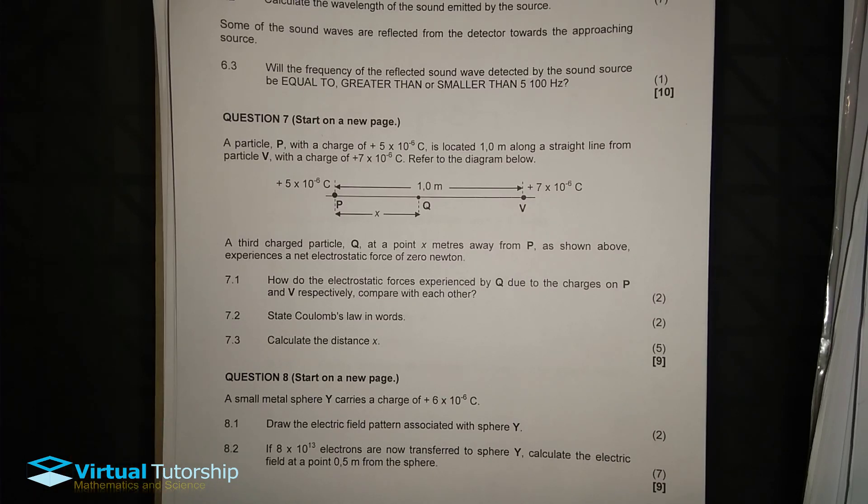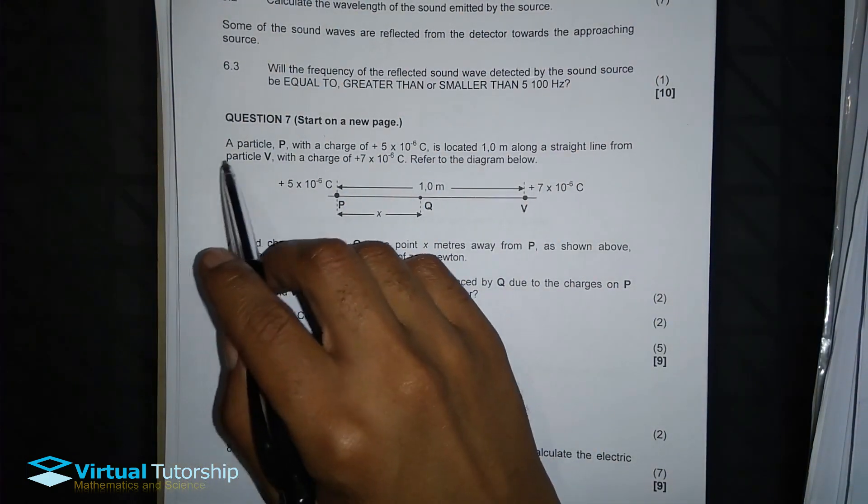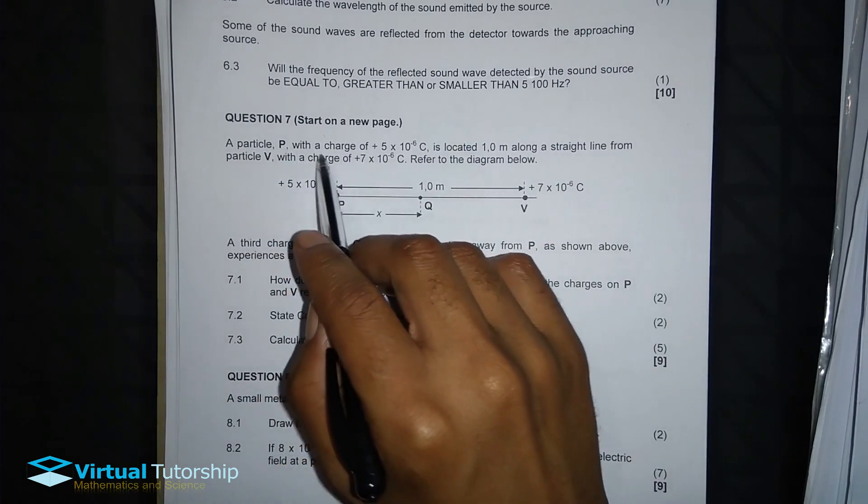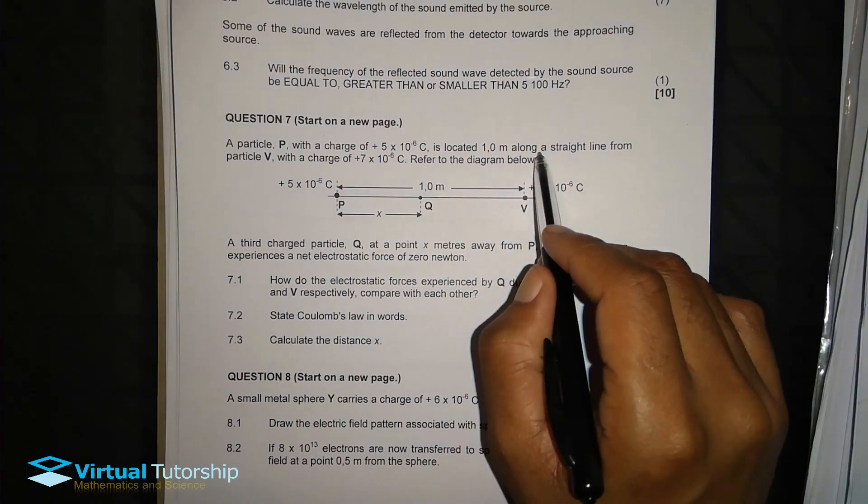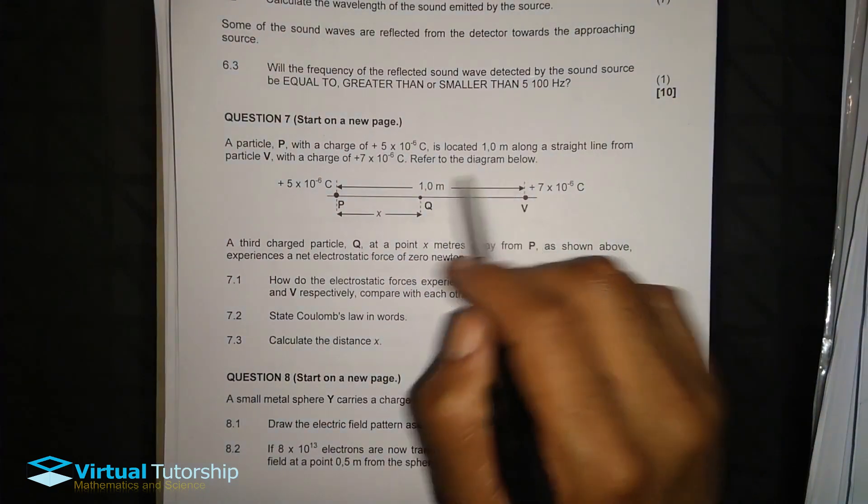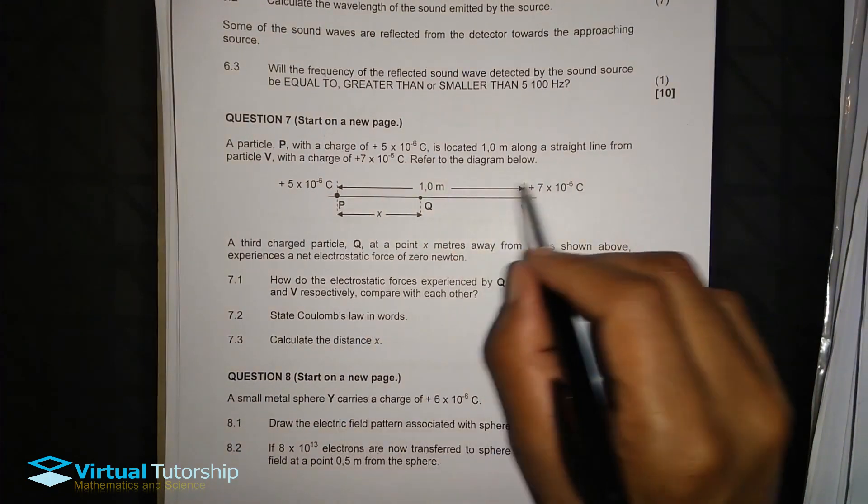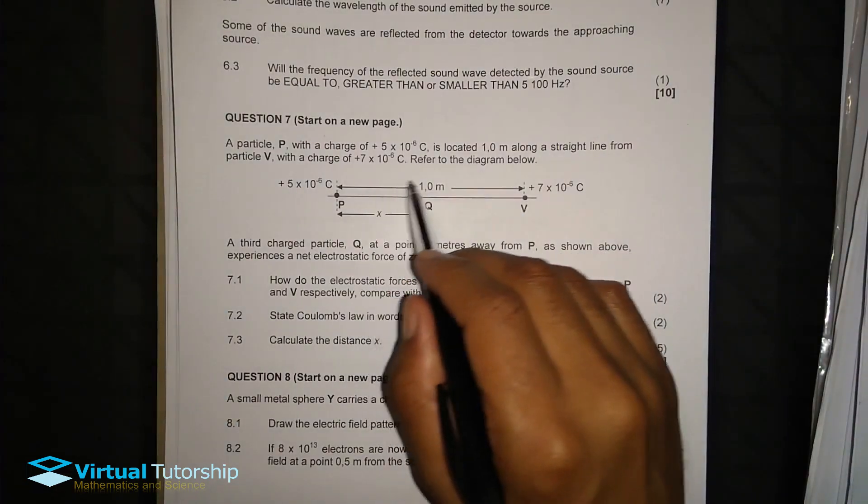Okay, now in this video you will be looking at question 7, a question on electrostatics, specifically electrostatic force. Alright, now I have two charges P and V. Particle P with a charge is located 1.1 meters along a straight line from particle V with a charge. Refer to the diagram below. So now my charge at particle P and another charge at particle V, and then the distance between them is 1 meter.